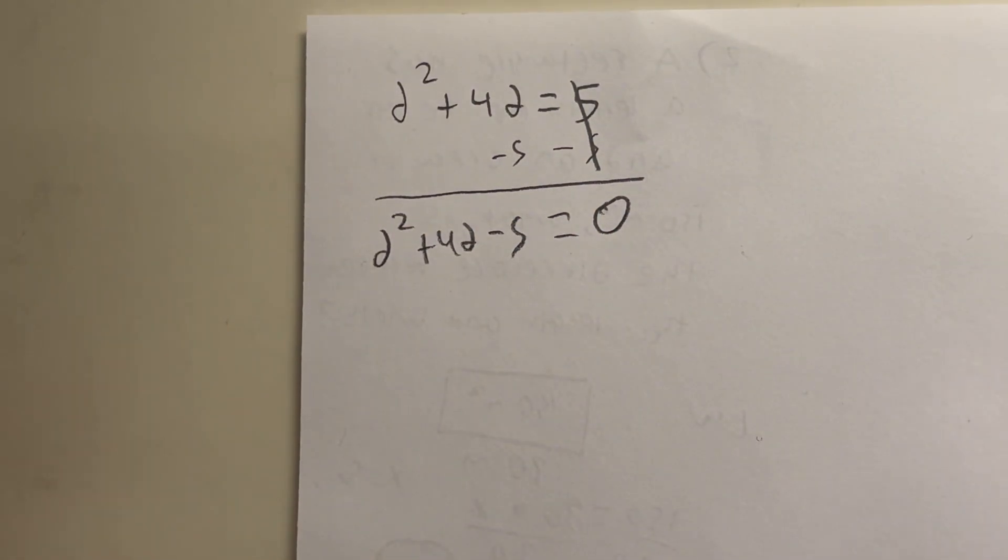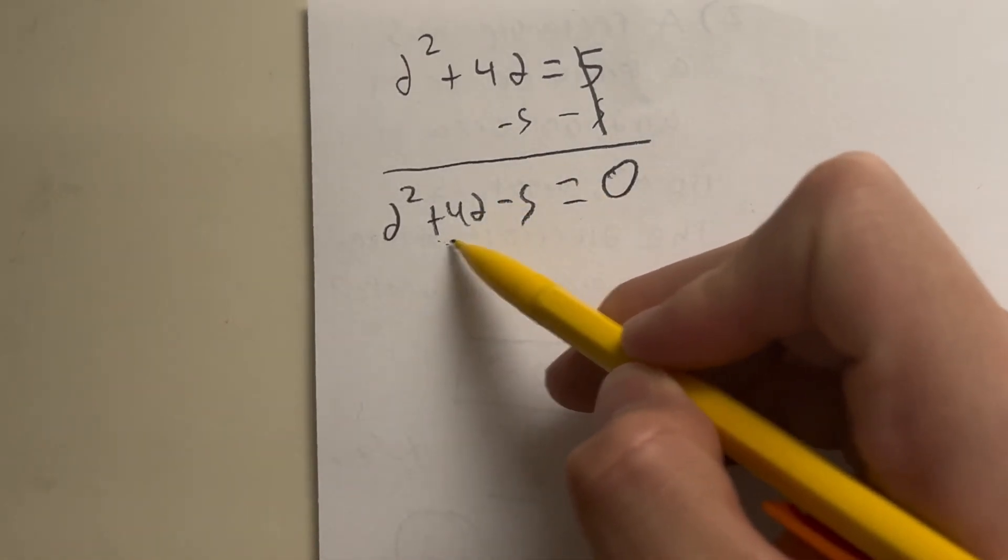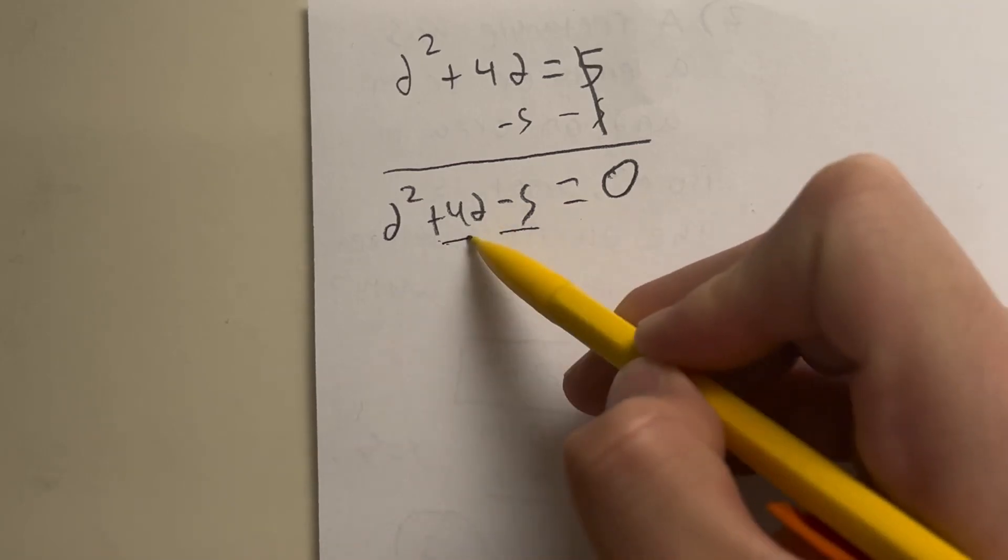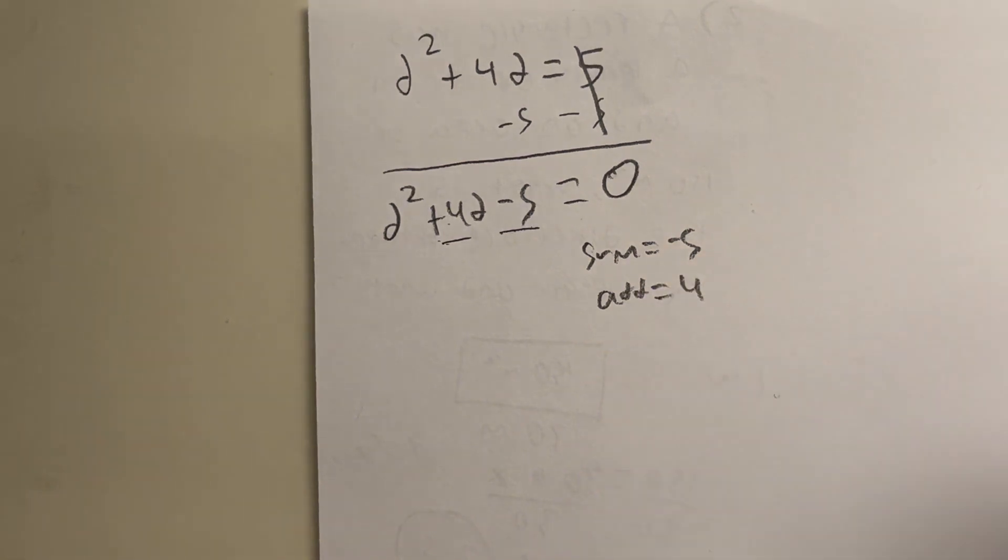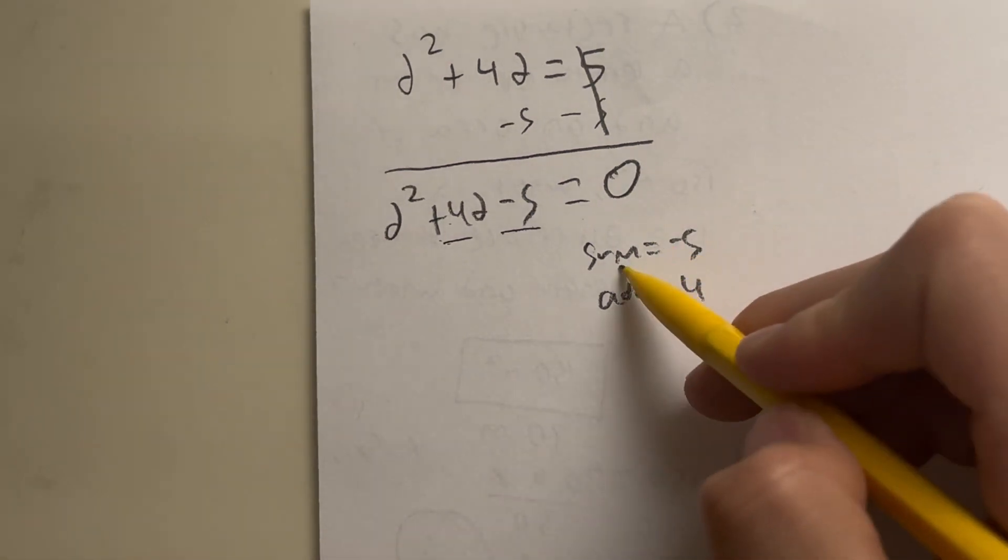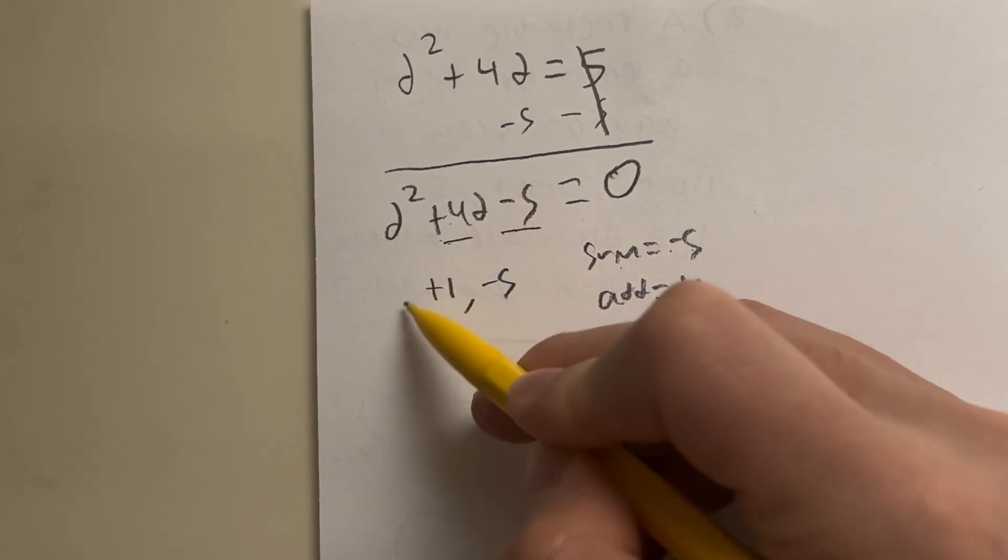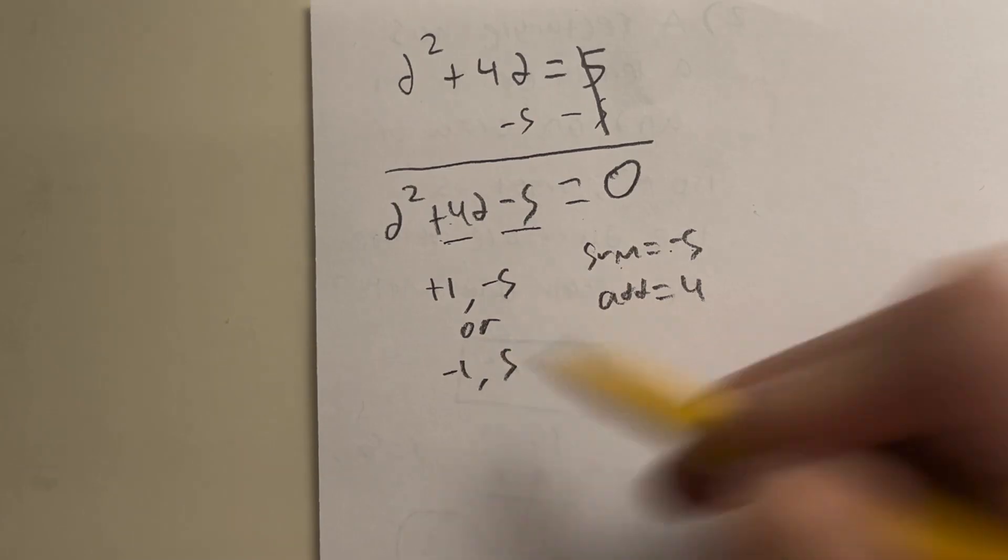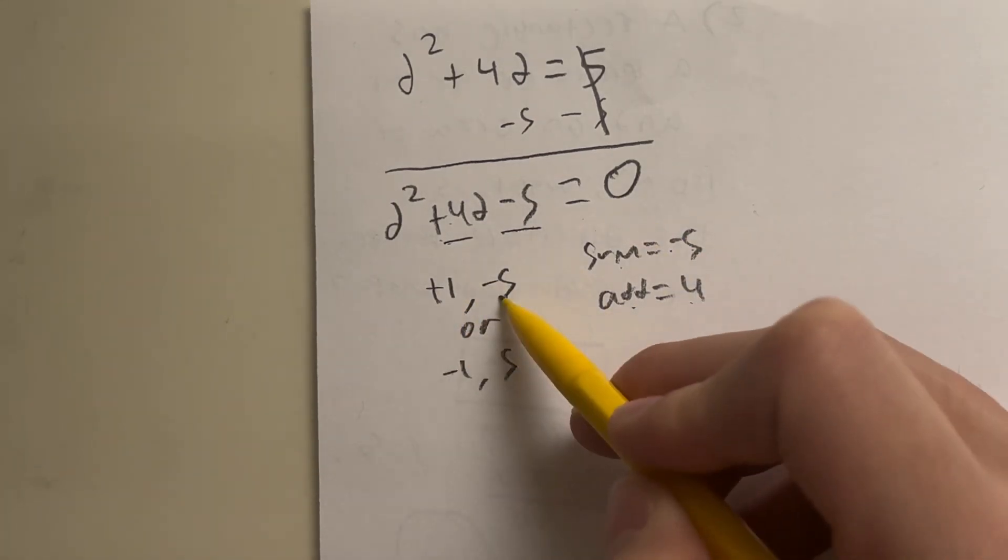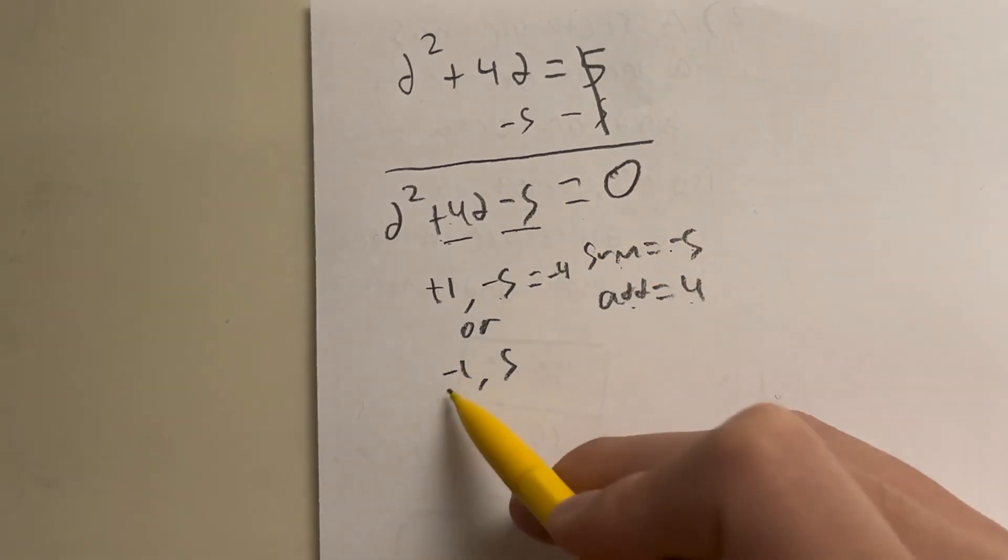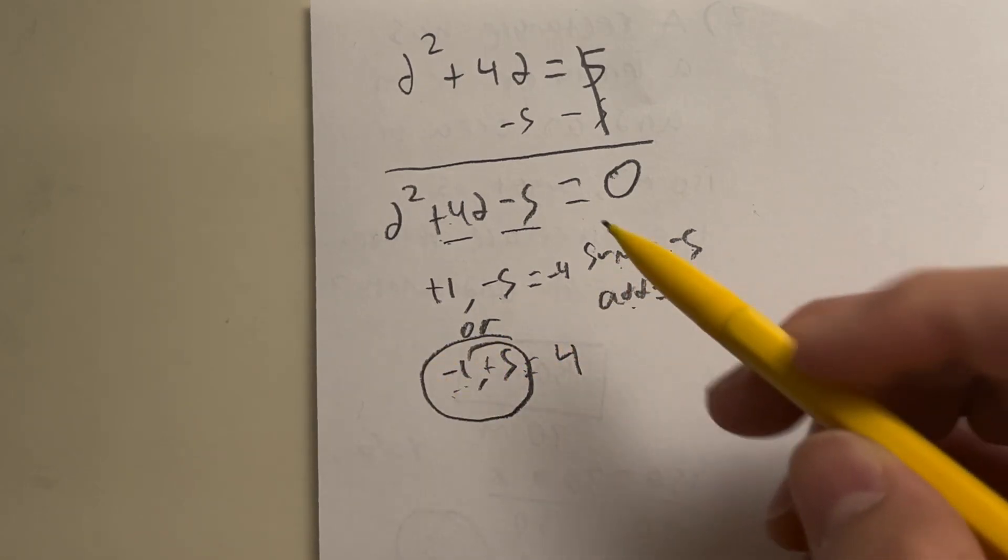Now, the reason why he was panicking was because he was trying to factorize this in his head. The idea is that we have to figure out what multiplies to negative 5 and adds to 4. So the product has to equal negative 5 and the sum adds to 4. So what are your possibilities? The factors multiplying to negative 5 have to be either positive 1 and negative 5, or it can be negative 1 and positive 5. So which one adds up to 4? 1 minus 5, when you add those up, that gives you negative 4. Negative 1 plus 5, add them up, that gives you positive 4.